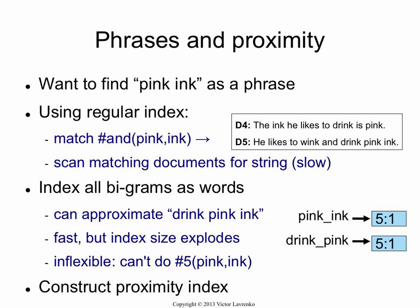This way you can even approximate trigrams. If 'drink pink' occurs once in a document and 'pink ink' occurs once in a document, and you know that 'pink' only occurs once, then you know that 'drink pink ink' must occur as a trigram because there's no other way. But this is a special case, and generally you cannot generalize beyond bigrams with something like that.